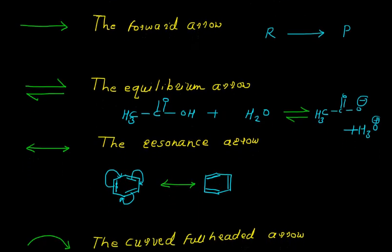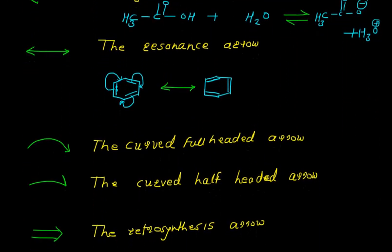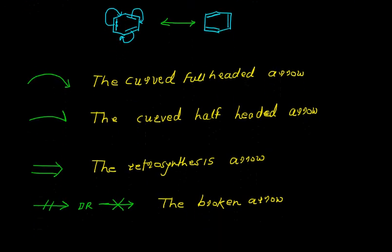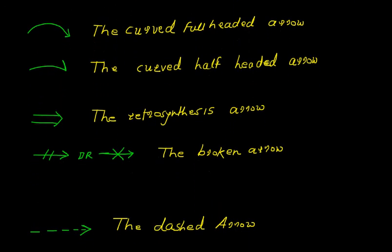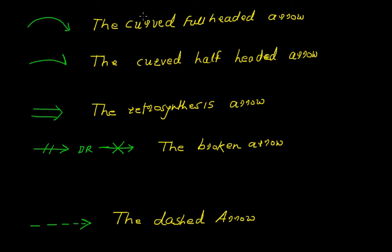Now we have some other arrows and these arrows are generally used in different organic reactions. Now this is the curved full-headed arrow. This indicates the movement of a pair of electrons from one bond or atom to another place between atoms where the new bond is being made.